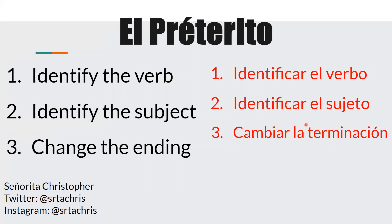I've summarized our steps into three when we're trying to conjugate a verb in the preterite tense. Uno: identificar el verbo. Dos: identificar el sujeto. Y tres: cambiar la terminación.